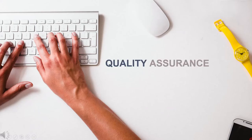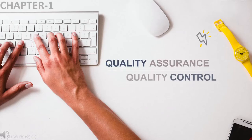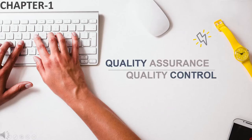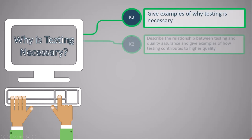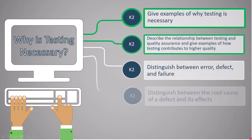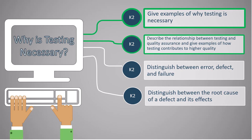In this lecture, we will focus on quality assurance and testing. The learning objective is to describe the relationship between testing and quality assurance and give examples of how testing contributes to higher quality. This topic is marked as K2.